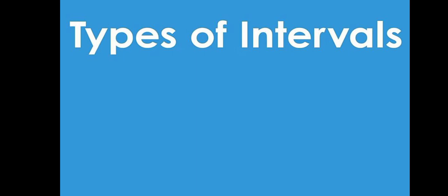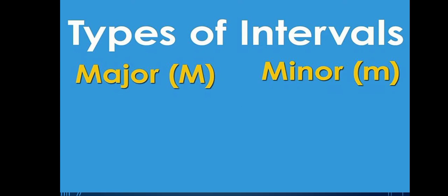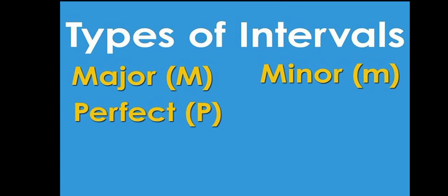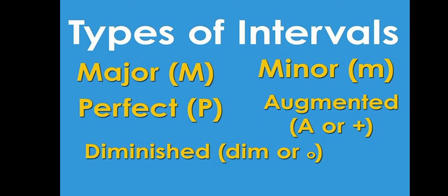Now there are the types of intervals. We said there are two parts — the type and the distance. We've finished the distance. Now we're looking at the types. There is a major interval, a minor interval, a perfect interval, an augmented interval, and finally a diminished interval. Those are the five interval types.